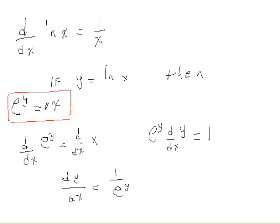But look at the relation here. It says that e to the y is equal to x. So then this implies that dy/dx is equal to 1 over x, which is exactly what we wanted to show.